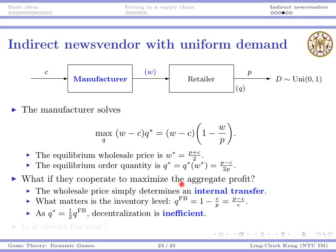Naturally we ask: if they cooperate and maximize aggregate profit, can they do better? When talking about aggregate profit, what really matters is q, because w only determines an internal transfer — how they share profit inside the system. From the system's perspective, q is the indicator for system efficiency.